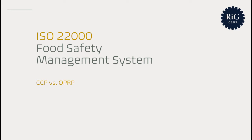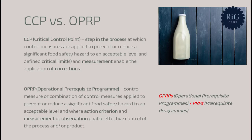This video is about critical control points and operational prerequisite programs. As mentioned in the previous video, ISO 22000 says that the organization shall categorize the selected identified control measures to be managed as OPRPs or at CCPs. So we have two concepts here. Let's take a look at the definitions provided by the standard.